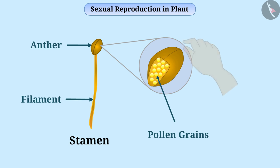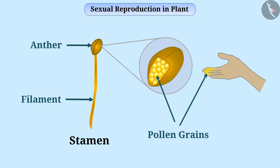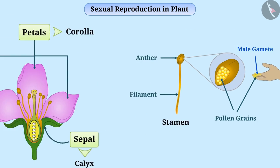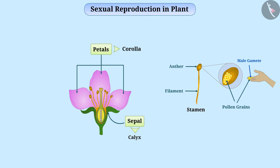If you touch the anther, you will have yellow powder on your hand which are pollen grains. In pollen grains, male gametes of the plant can be found. The colour of petals and their fragrance attract insects, which play an important role in moving pollen grains from one flower to another.